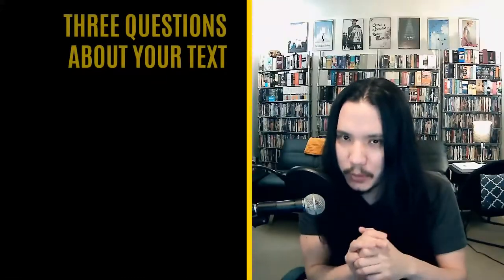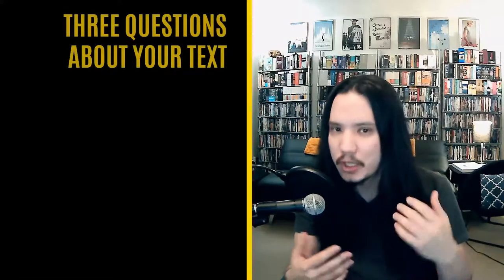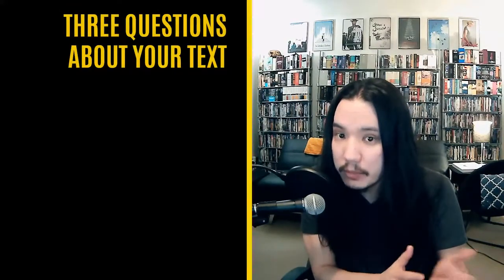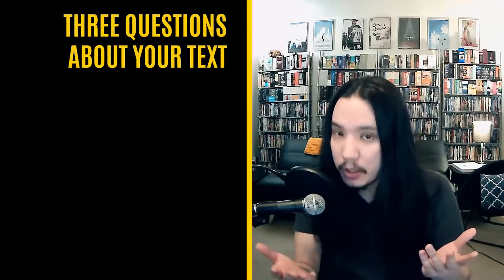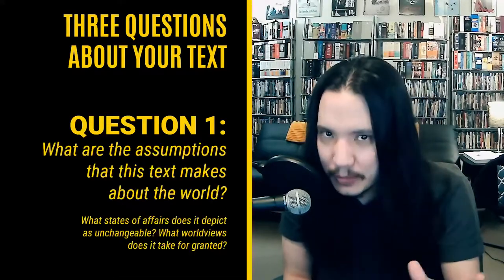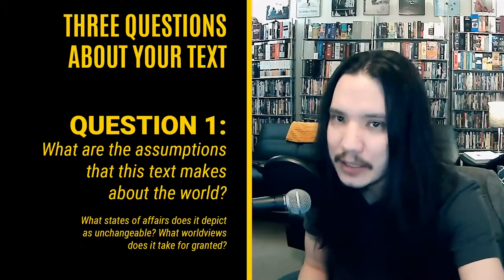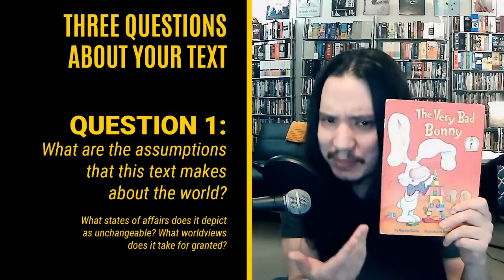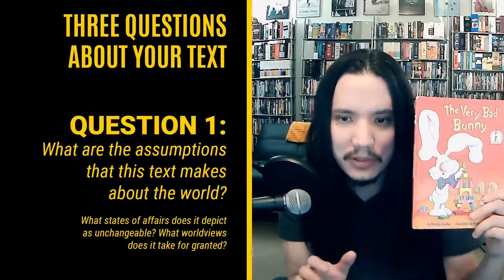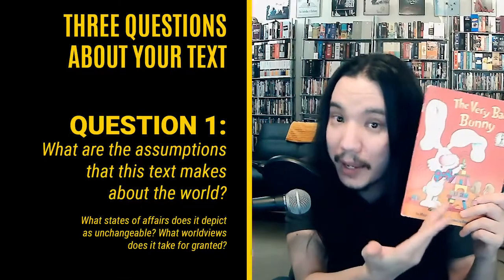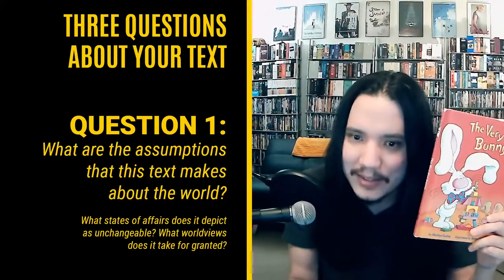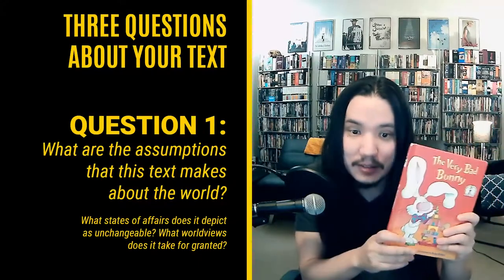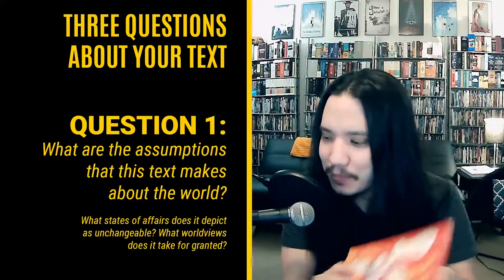Which brings us to our exercise. Consider the text you found and ask yourself three questions — you can pause the video to reflect. Question one: what are the assumptions this text makes about the world? Here's an example: 'The Very Bad Bunny,' a children's book about a bunny who misbehaves. The book seems to take for granted a worldview in which there is such a thing as a good person, a bad person, or badness as a trait — not just bad behavior. I find this a little troubling, but maybe my interpretation of the book's biases is itself biased.